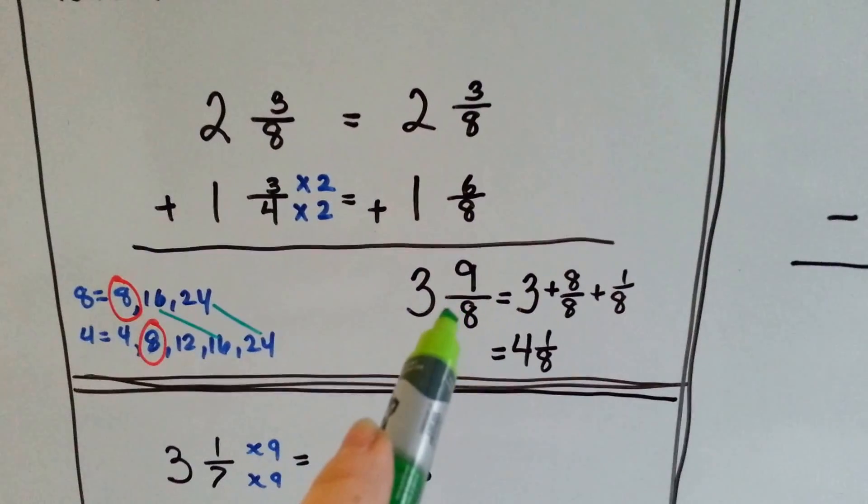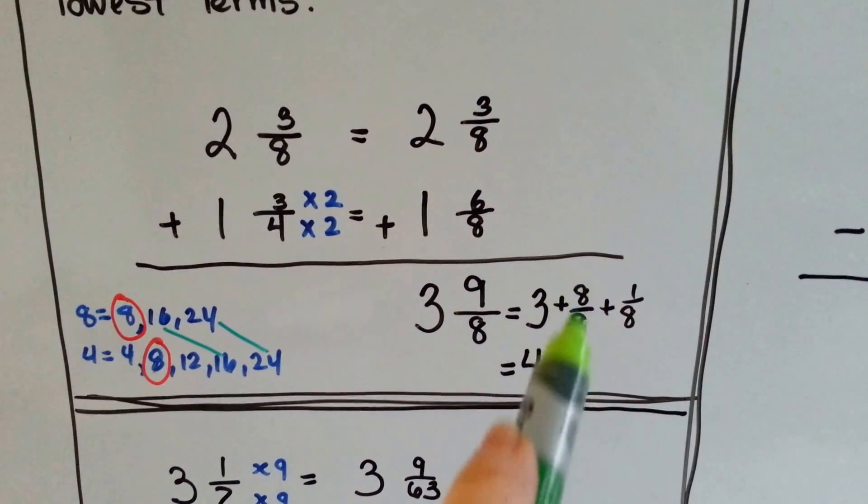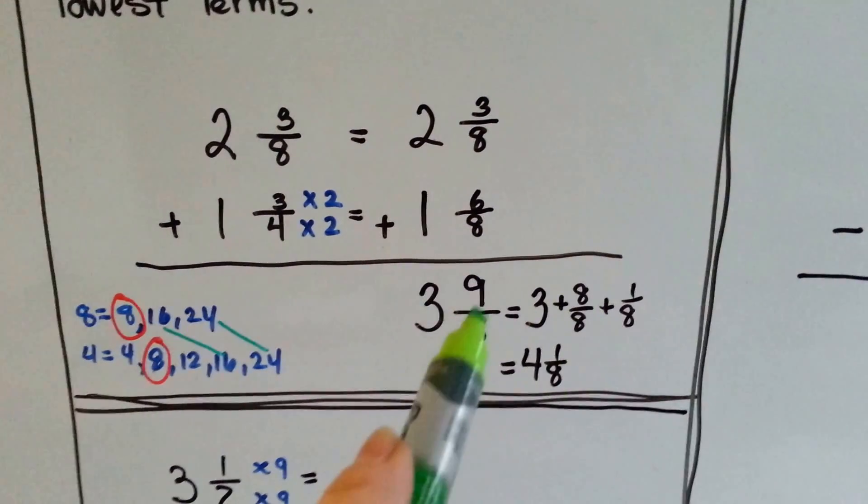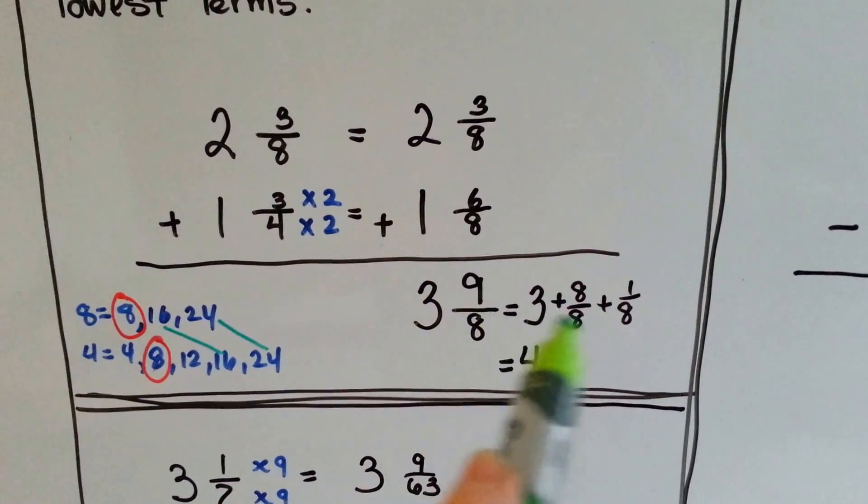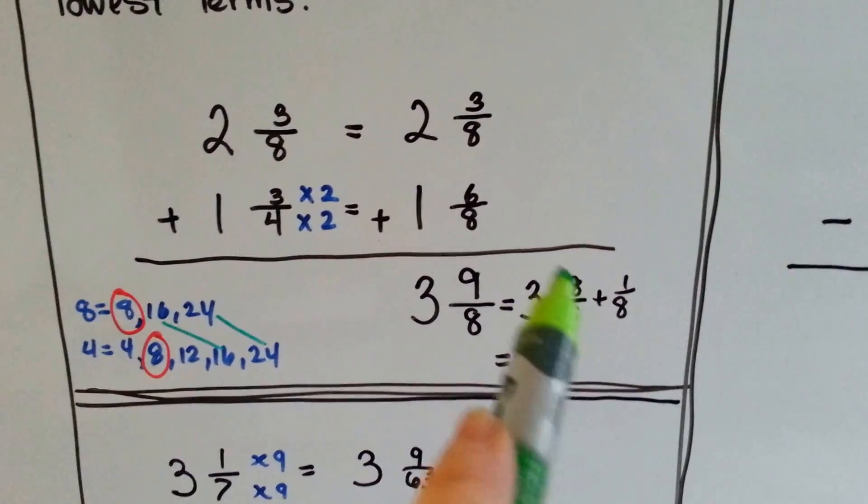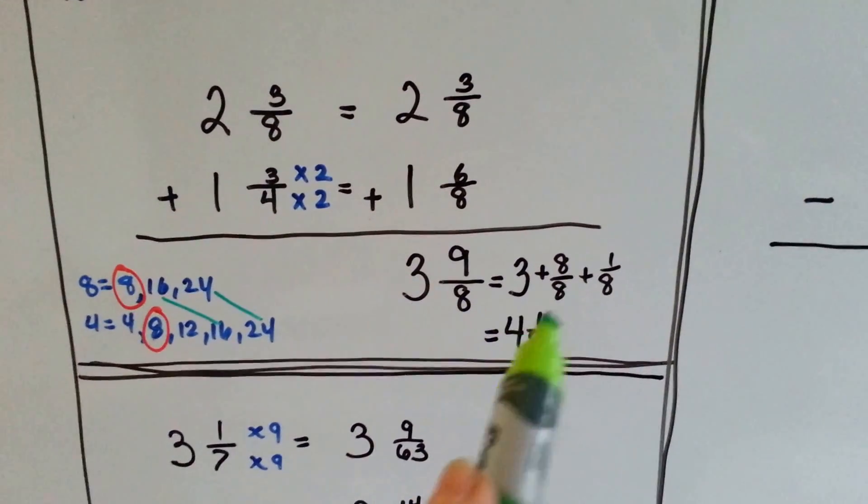Now we have three and nine-eighths, but you see, we can pull an eight-eighths out of this. Remember, if the numerator and denominator are the same, it equals one. So we pull an eight-eighths out of this and have one-eighth left over, and we give that one to the three, and now we have four and one-eighth.